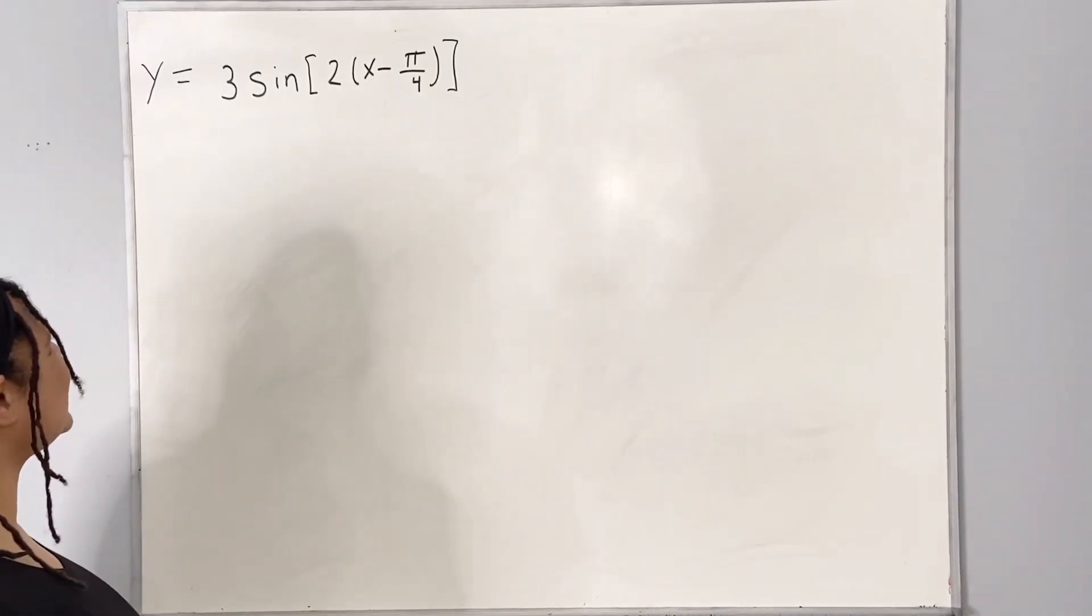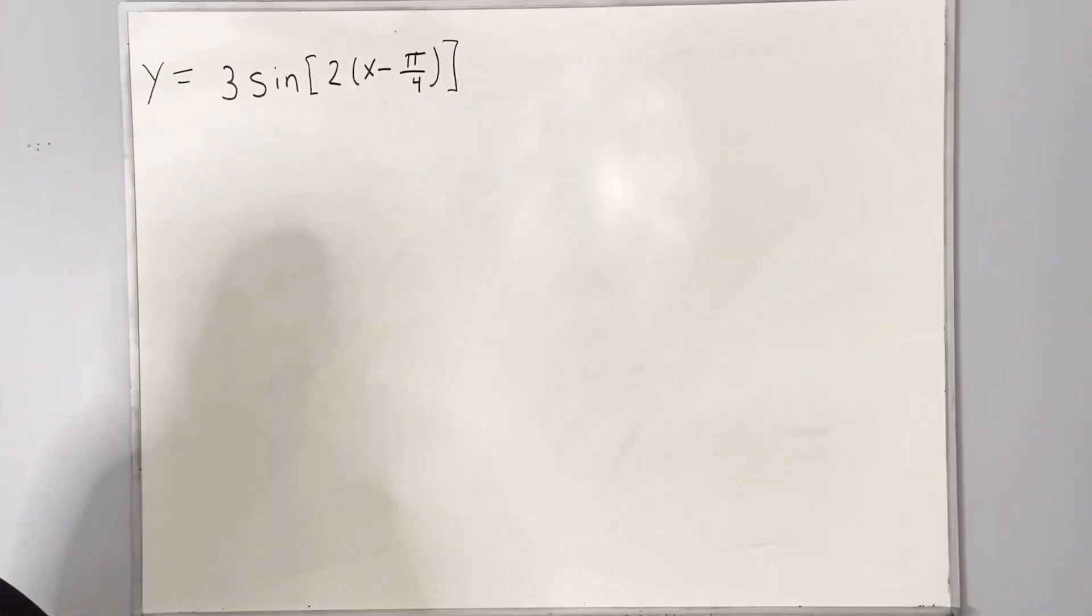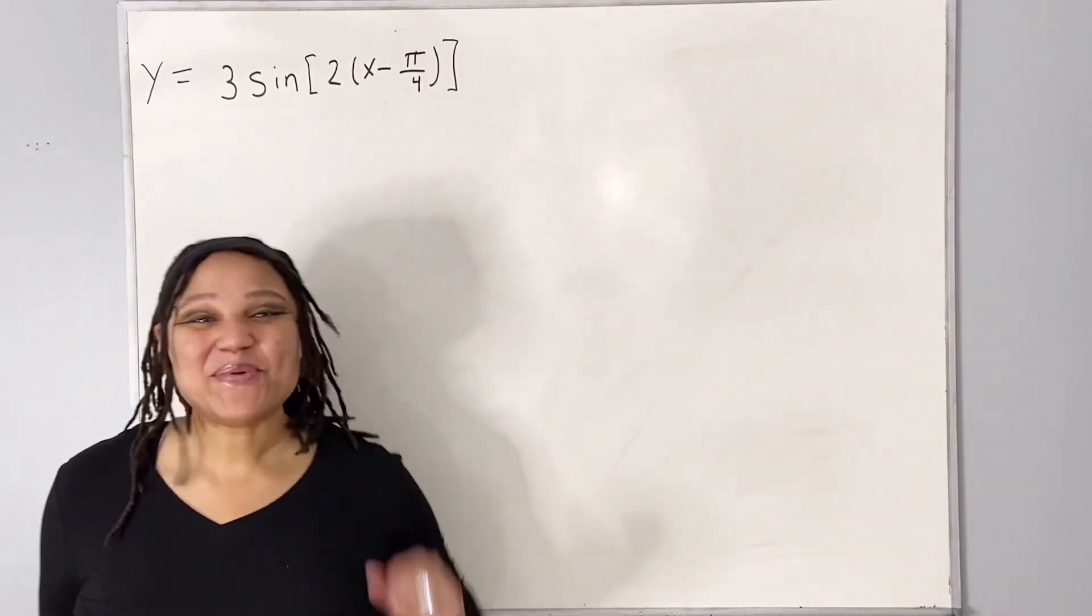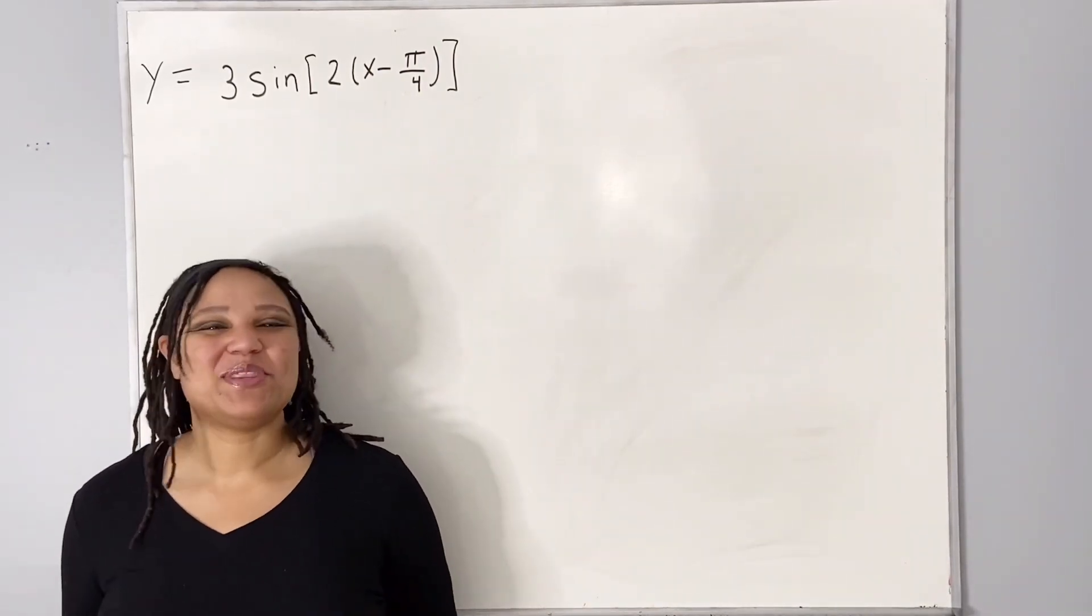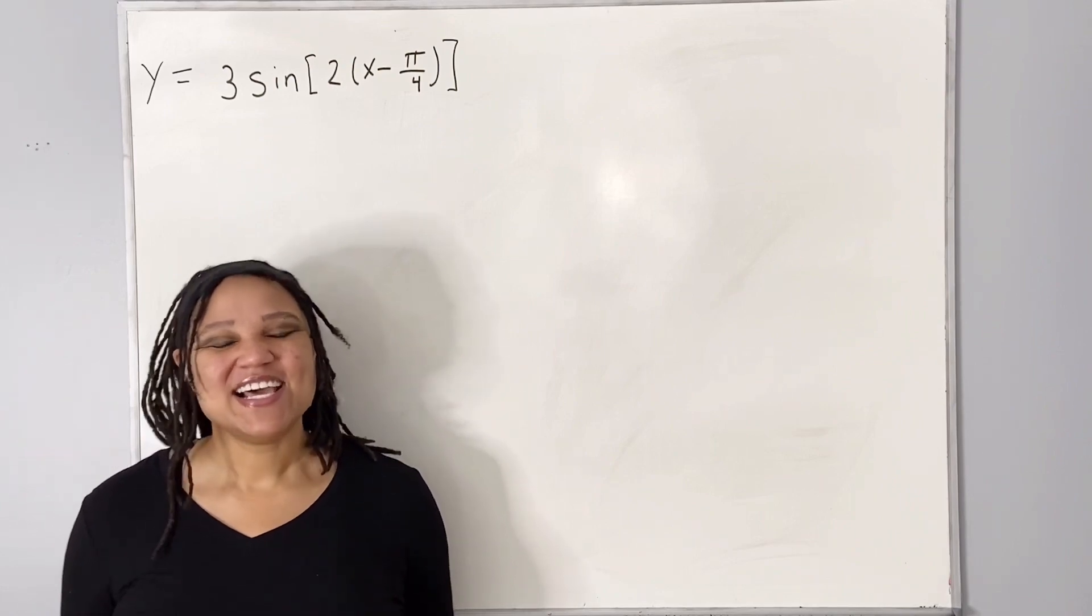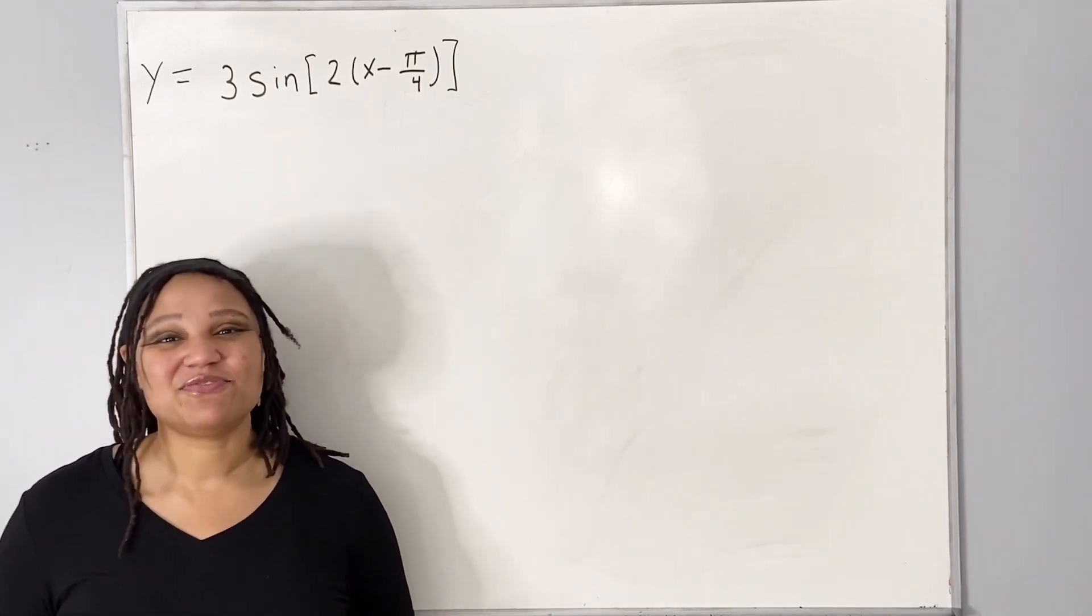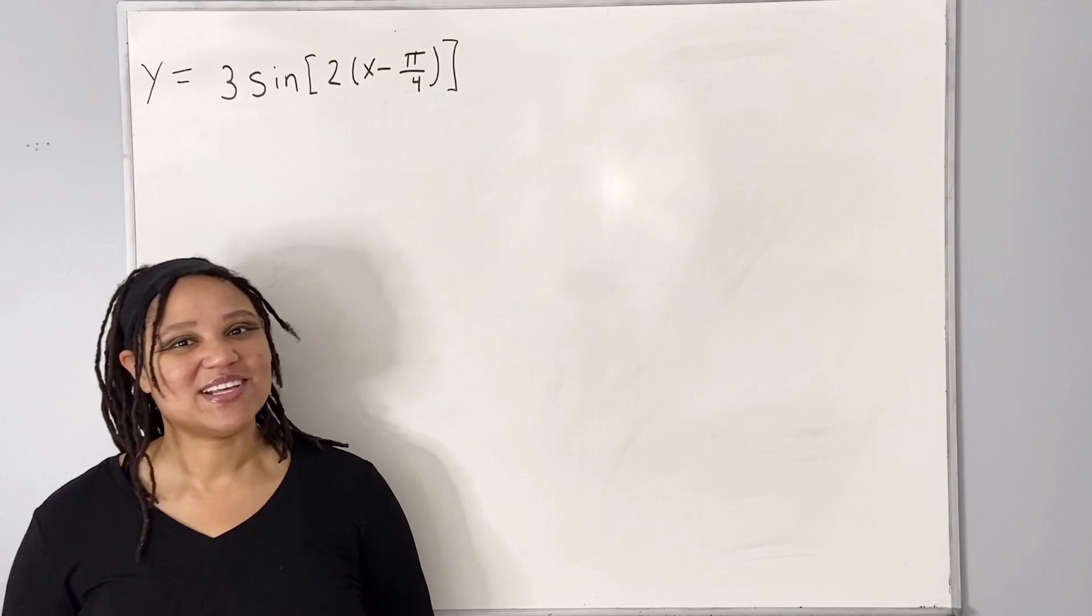Here we have y equals 3 sine of 2 times x minus pi over 4, and we want to graph the sine function with multiple transformations. So the first thing we need to do is to first graph the original sine graph.